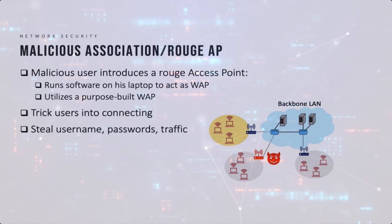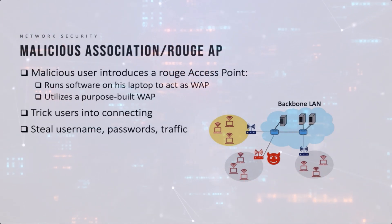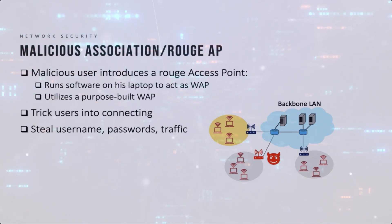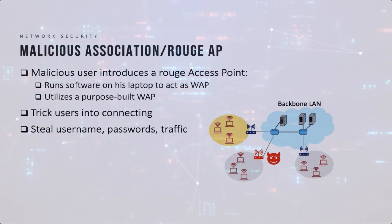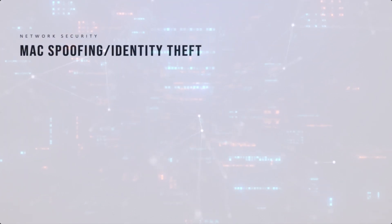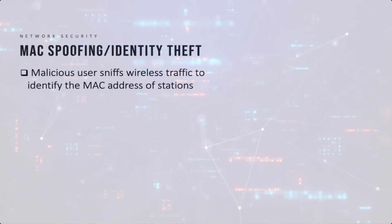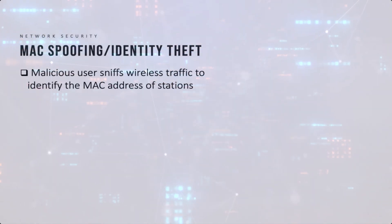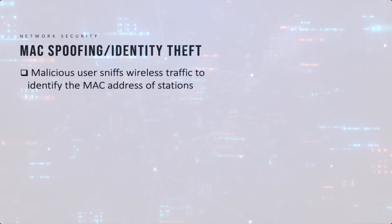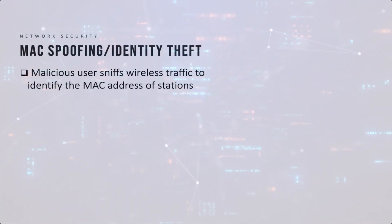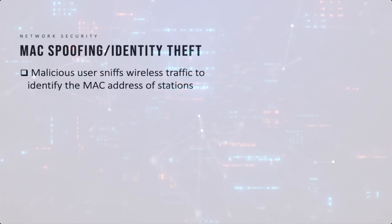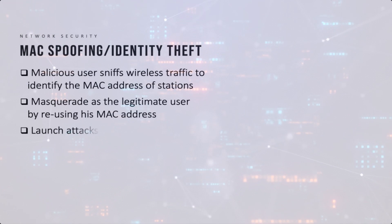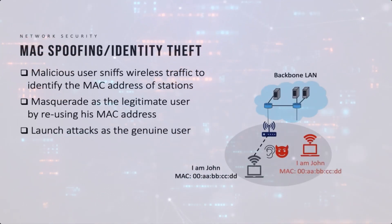For this attack to be successful, an insider needs to place the rogue wireless access point within the corporate network boundaries and connect it to the backbone LAN. Another issue is MAC spoofing, or identity theft. Unlike wired channels, sniffing traffic on a wireless channel is much simpler because the waves are everywhere. A malicious user at a nearby strategic location can sniff wireless traffic and identify the MAC addresses of legitimate stations, then masquerade as a legitimate user.